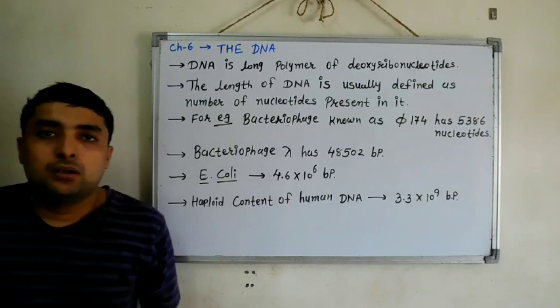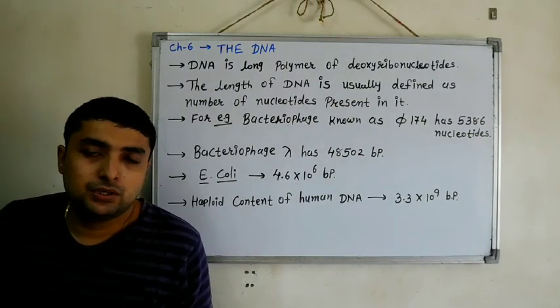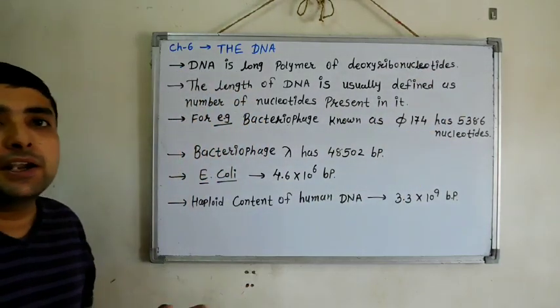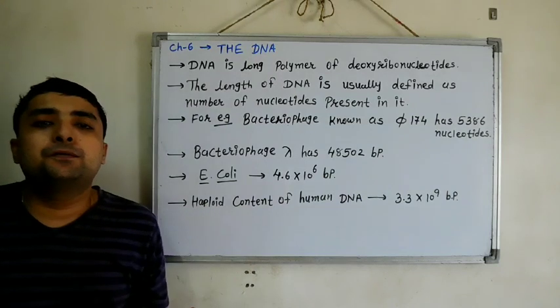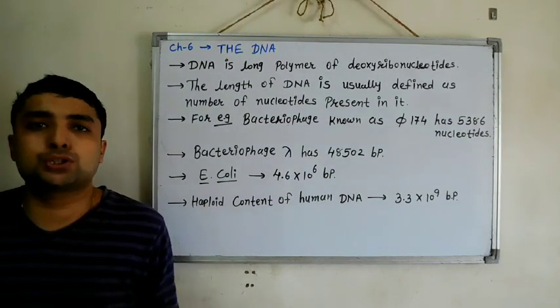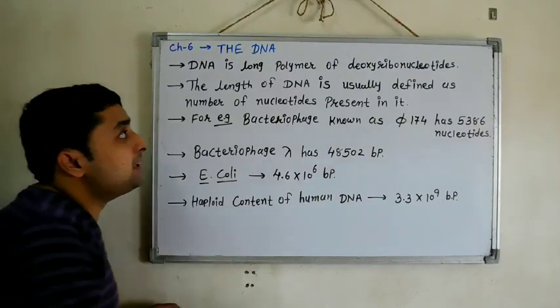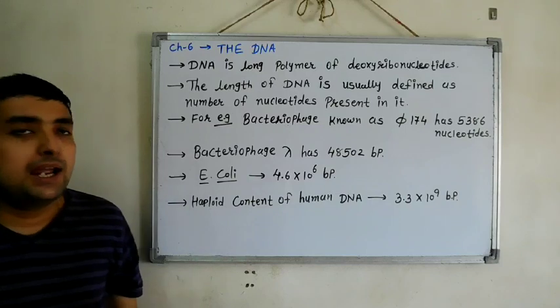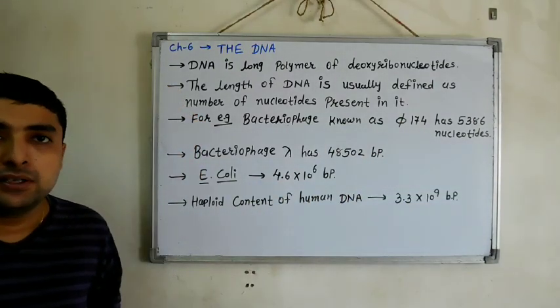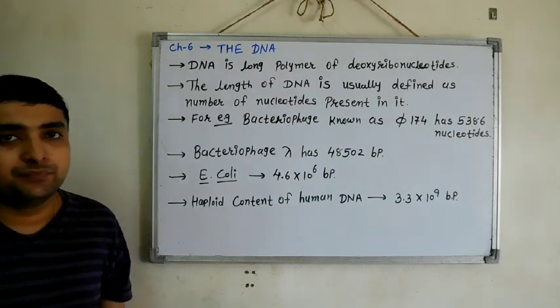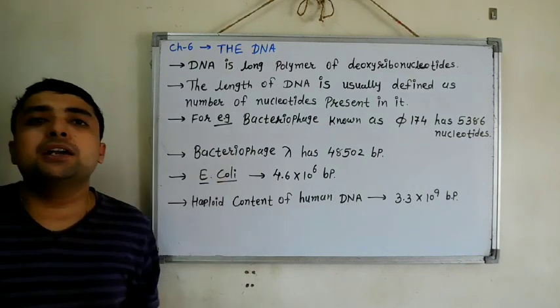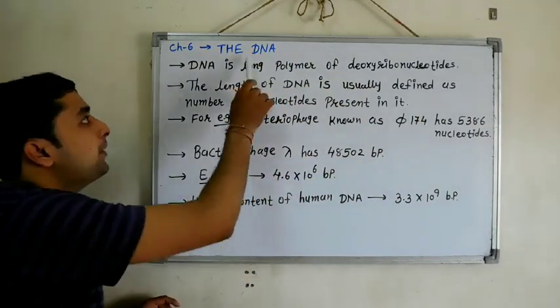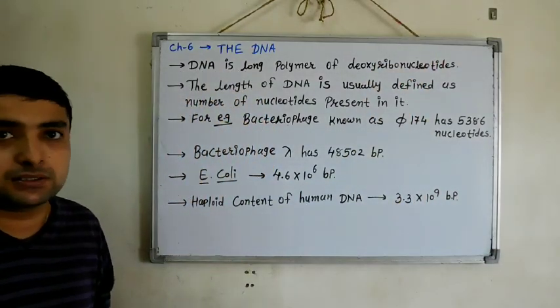The DNA - you already know the full form is deoxyribonucleic acid. Why deoxyribonucleic acid? Because DNA contains a pentose sugar lacking one oxygen atom, called deoxyribose sugar. So the full form of DNA is deoxyribonucleic acid, and the remaining components are nitrogen base - adenine, thymine, guanine, or cytosine - and another component is phosphate group.